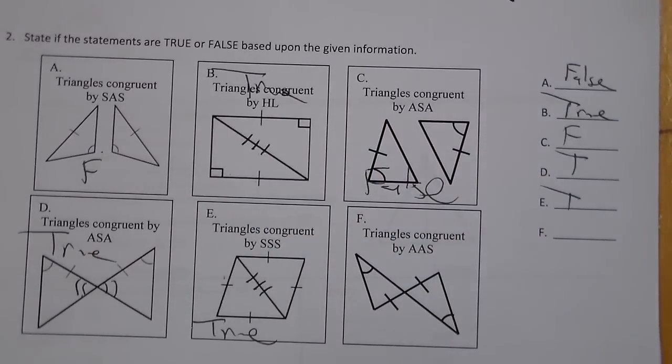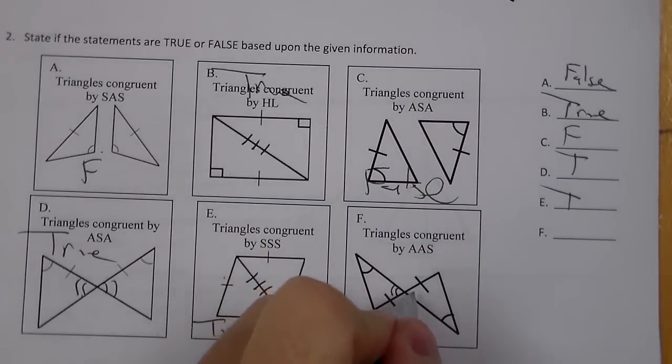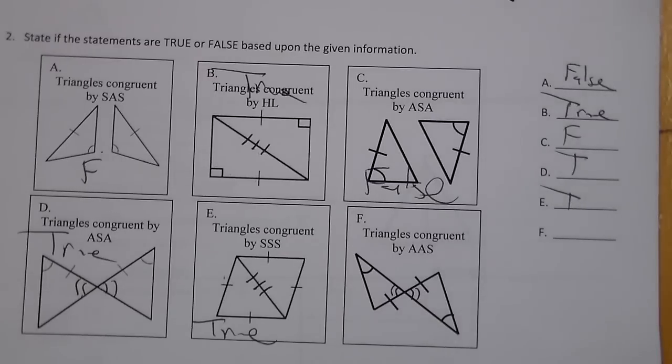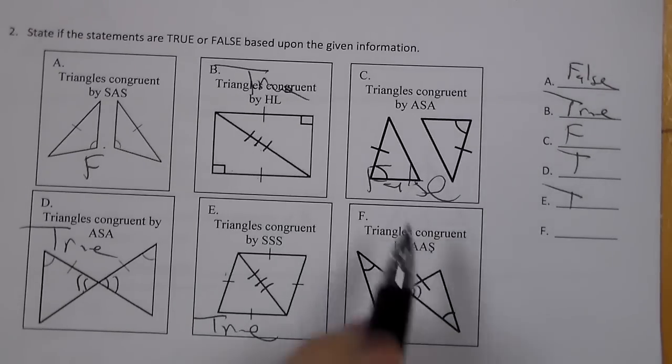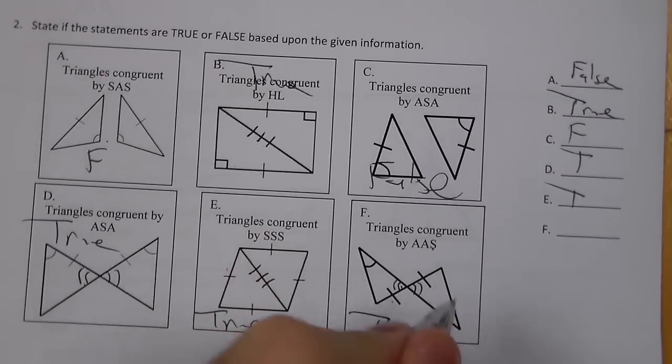F, triangles congruent by angle, angle, side. I'm going to mark vertical angles here. I've got to be careful if it's Angle-Angle-Side or Angle-Side-Angle. I have two sets of angles and the side is not between them. So we look here, S is not between A's, so that is True.